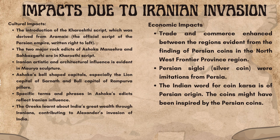Iranian artistic and architectural influence is evident in Maurya sculpture. Ashoka's bell-shaped capitals, especially the lion capital of Sarnath and bull capital of Rampurva pillars, reflect this influence. Specific terms and phrases in Ashoka's edicts also reflect Iranian influence. The Greeks learned about India's great wealth through Iranians, contributing to Alexander's invasion of India.